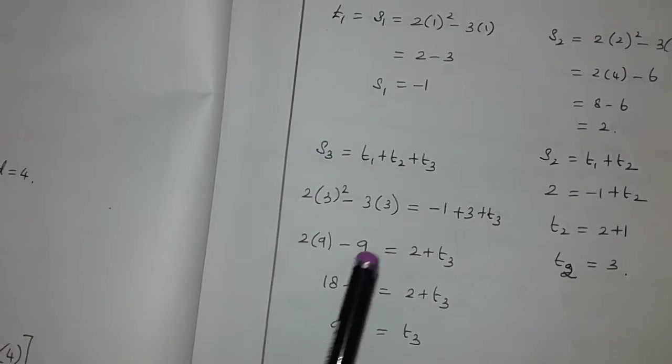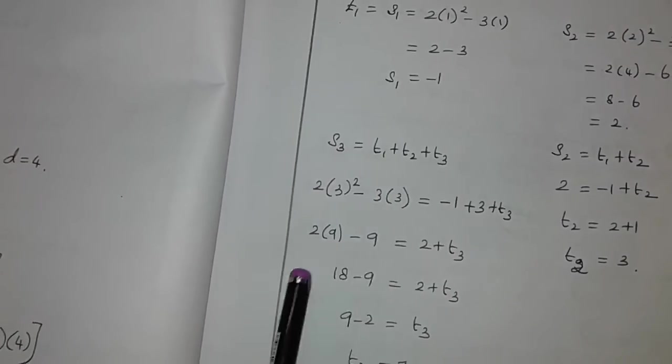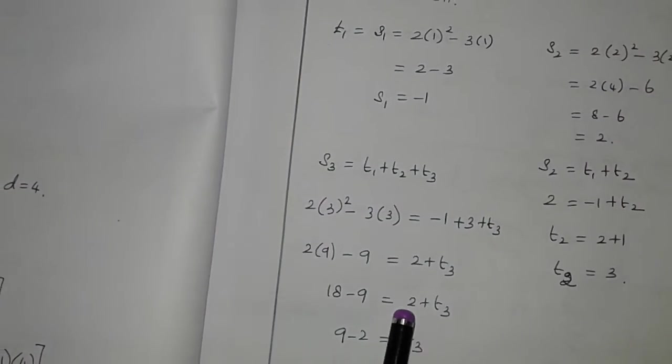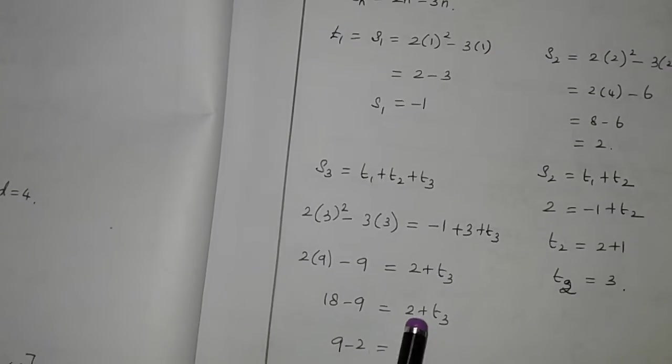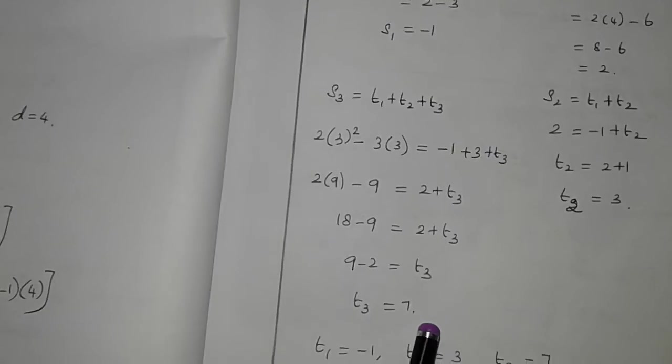Now find T3. 3 square is 9. 2 into 9 is 18. 3 into 3 is 9. So 18 minus 9 is equal to minus 1 plus 3 plus T3. 18 minus 9 is 9. Minus 1 plus 3 is 2. Then T3 is equal to 9 minus 2. T3 is equal to 7.